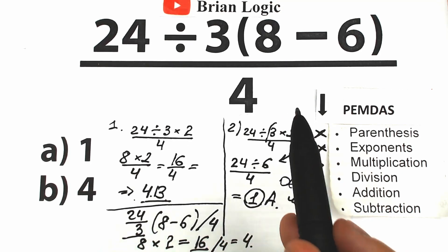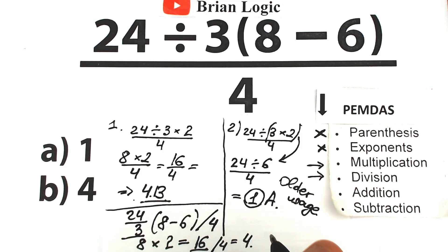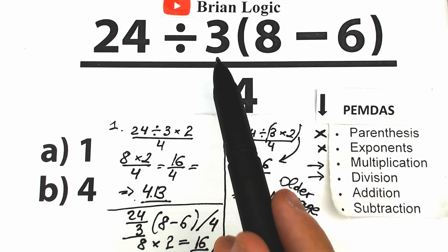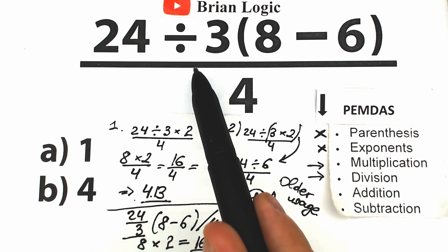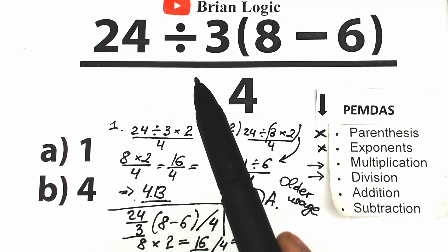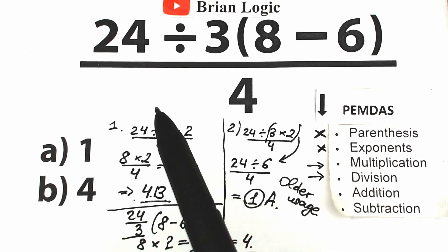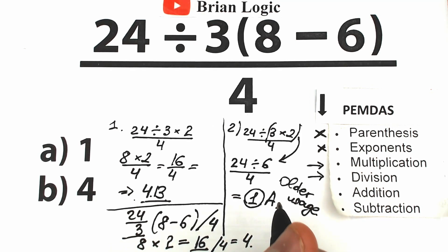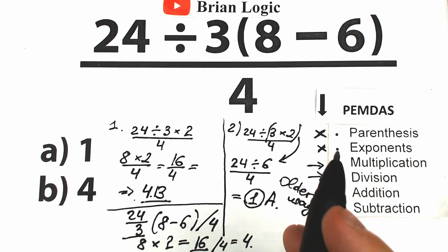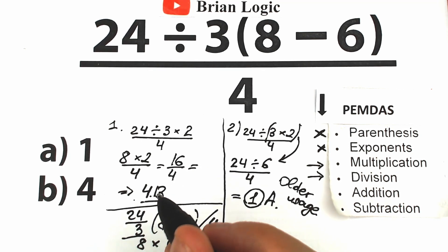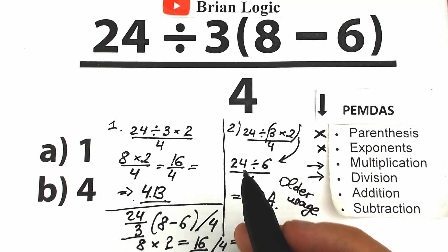There's a tricky moment with calculators: if you enter the problem step by step, you might get a wrong intermediate result — for example, your calculator might multiply 8 times 8 giving 64. Instead, find a calculator where you can enter the whole problem at once and press equals. I'm 98% sure you will get 4.